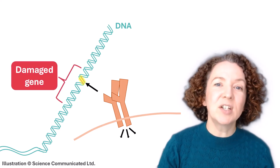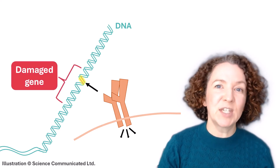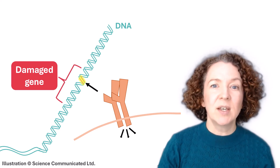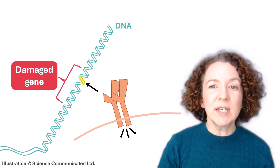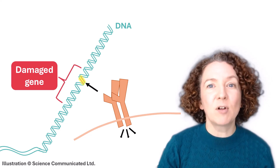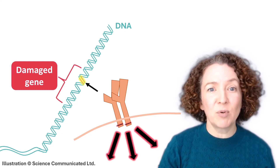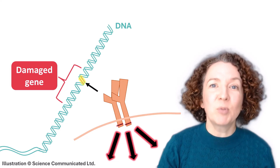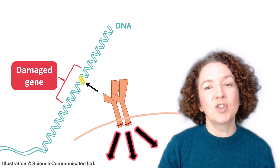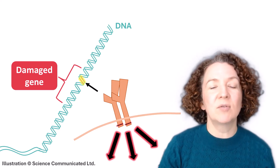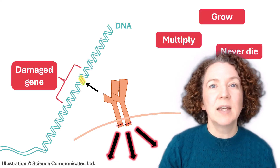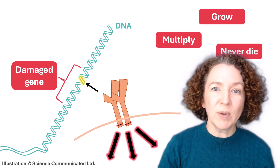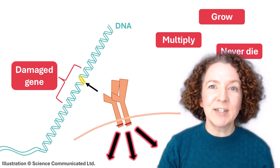Now imagine that the gene for this protein has become damaged, causing the cell to make a faulty version of the protein. This faulty protein starts transmitting signals into the cell, telling it to grow, to multiply, to never die.